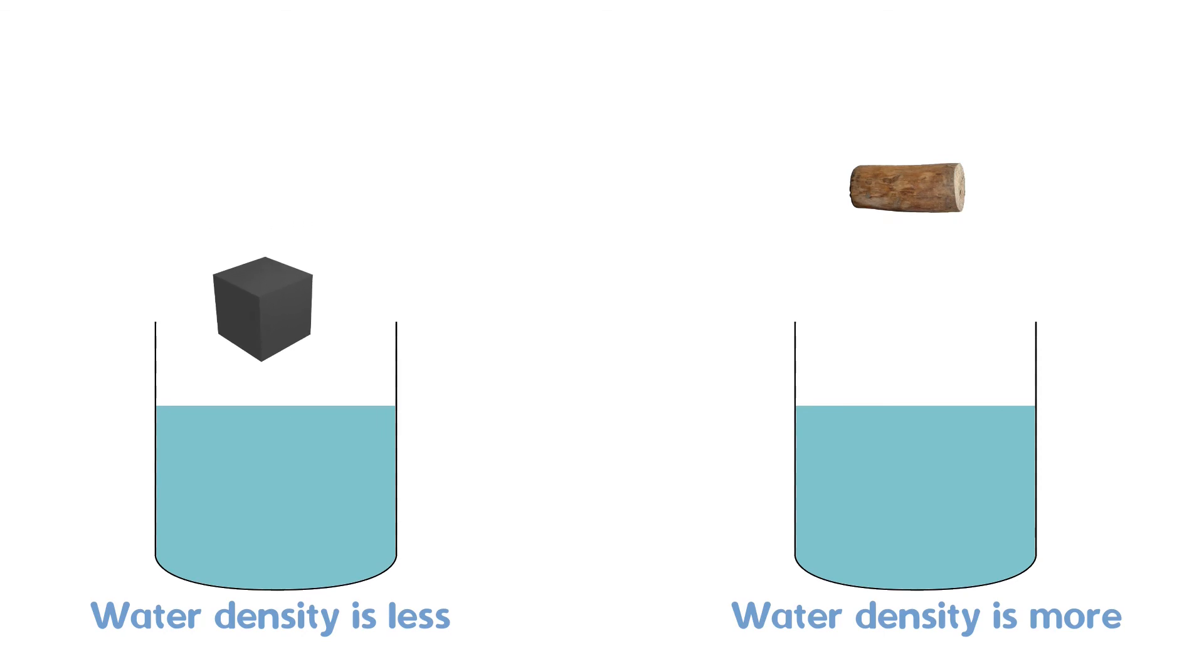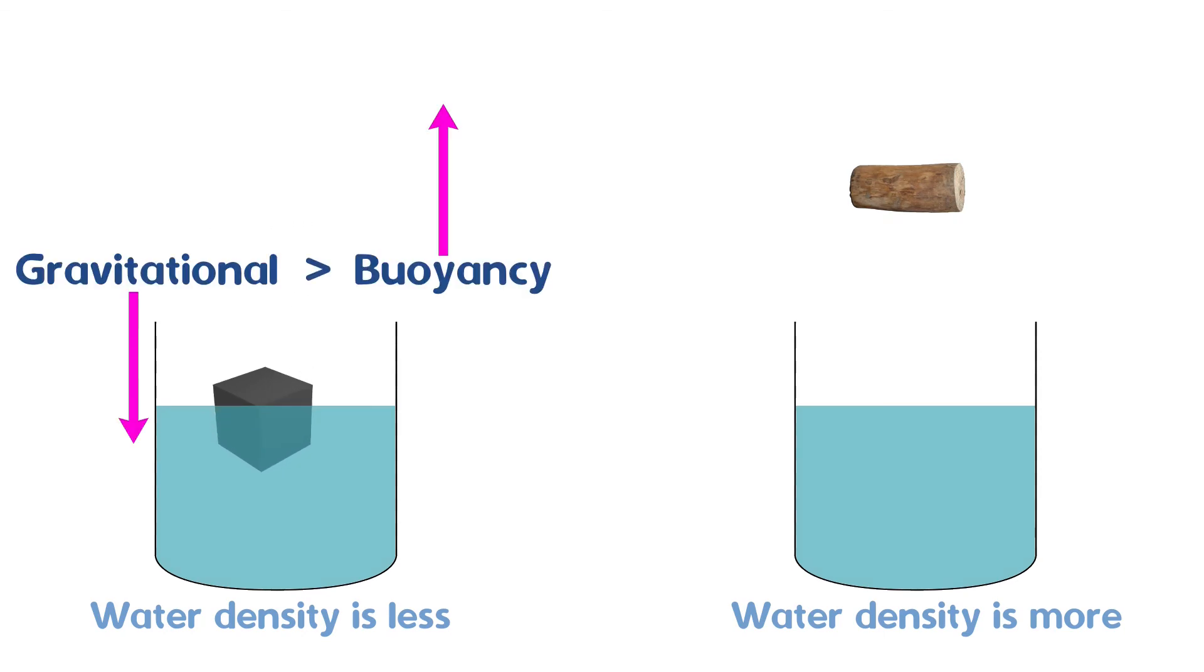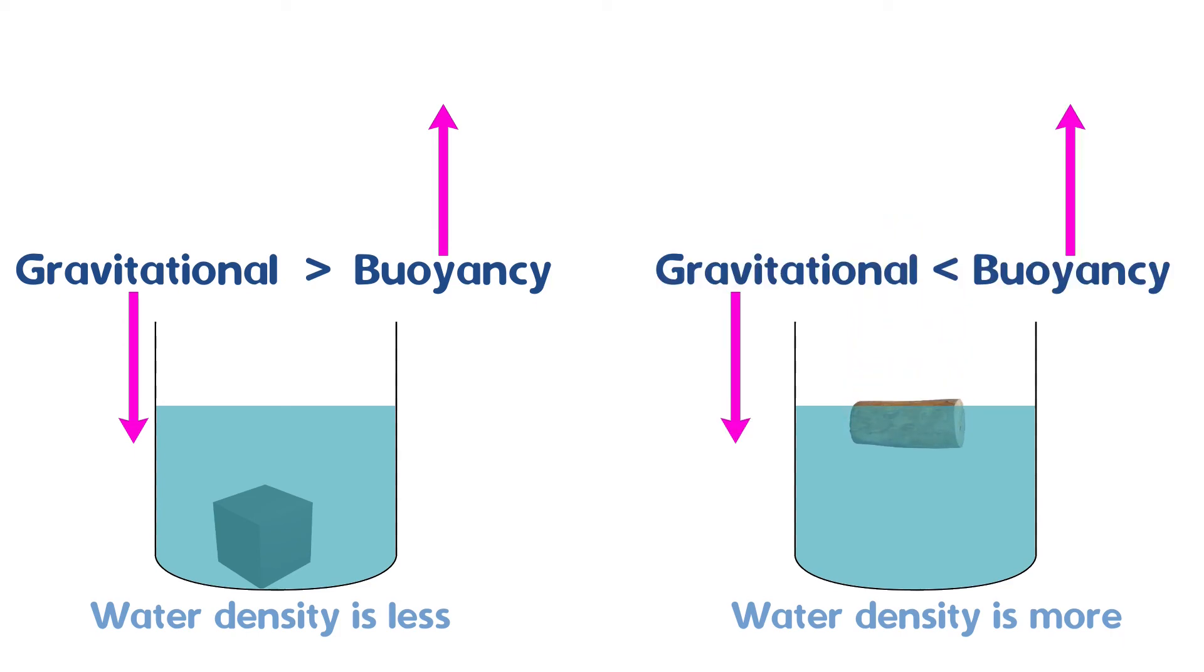When an object with a higher density than water is merged in it, the buoyancy force remains weaker compared to gravitational force and thus the object sinks in. But when the density of an object is less compared to water, then buoyancy force overtakes the gravitational force and the object starts floating on the water.